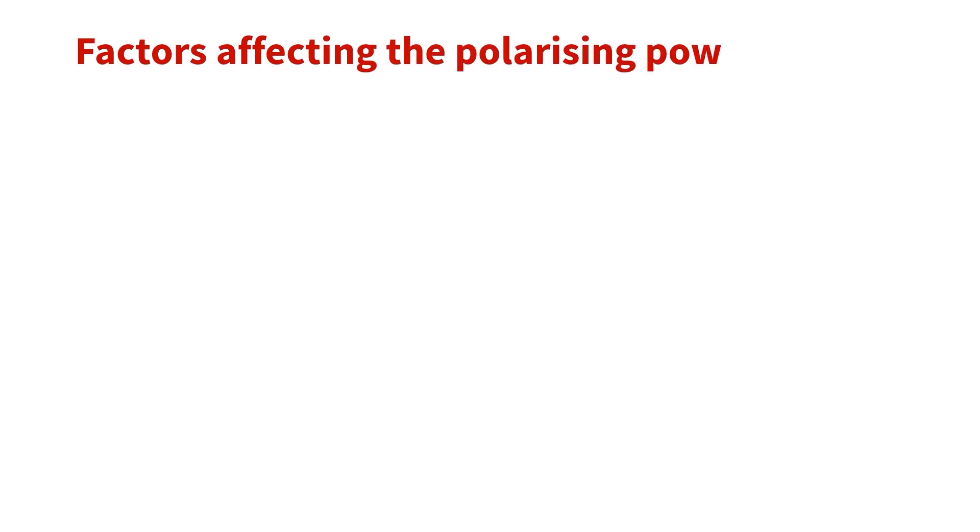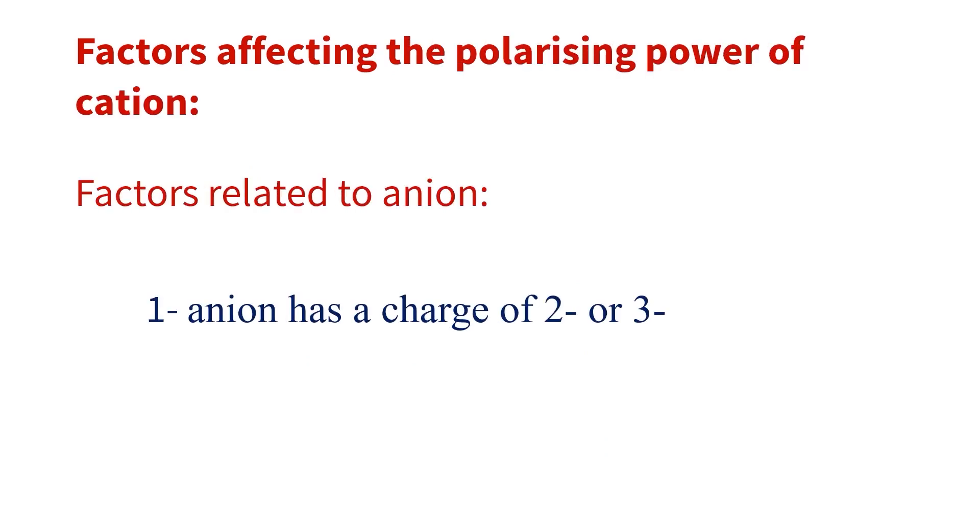Other factors that affect the polarization power of the cation but are related to the anion include the ease of the anion to be polarized due to higher negative charge on the anion, such as minus 2 or minus 3.